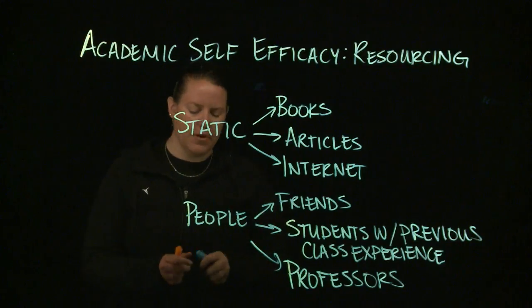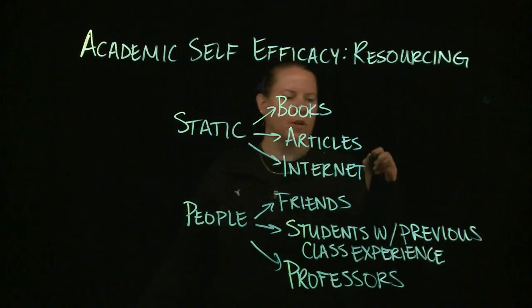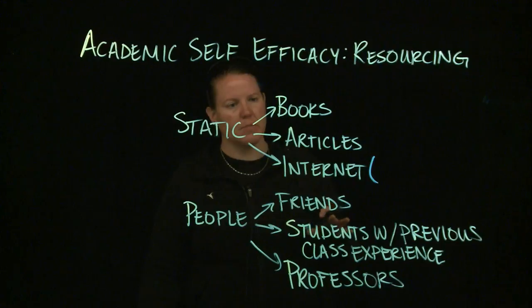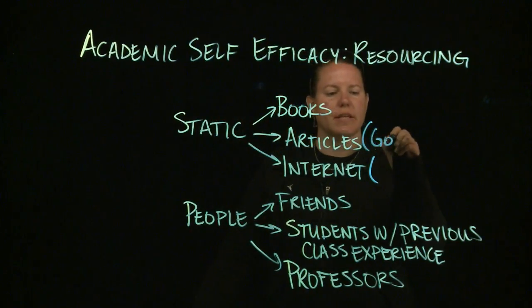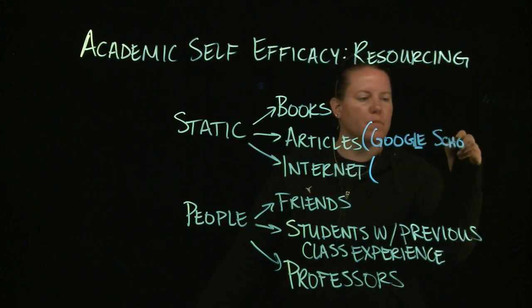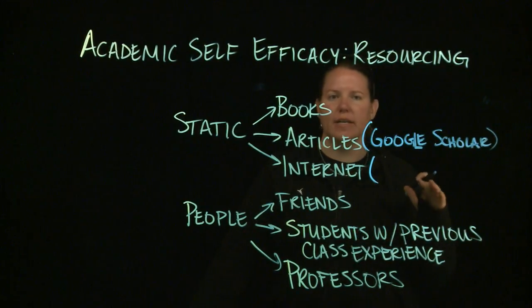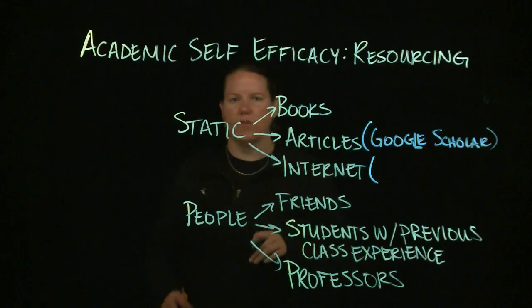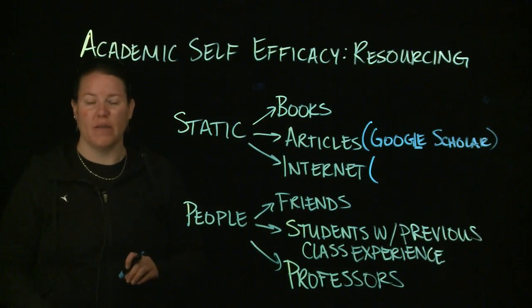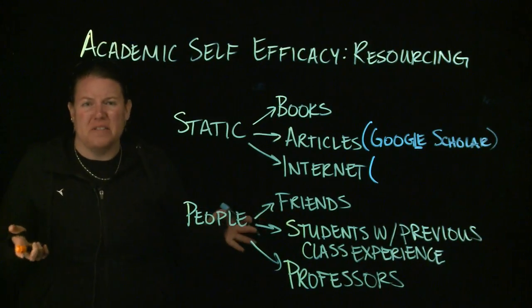In terms of resourcing, the internet tends to be the first stop and often the most dangerous. If you're using your textbook or articles, those can be safe bets, especially if you're looking on Google Scholar. The internet tends to be the most dangerous because you just Google your problem — often the exact question you're having — and you might end up at sites like Wikipedia or something along those lines.